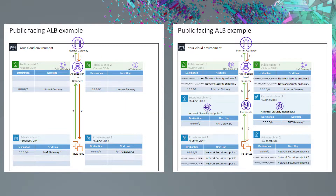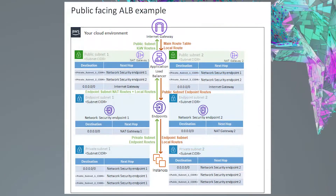To give you a better idea of what we're trying to accomplish, shown here are example diagrams before and after the route table changes are made. As you can see, we are inserting both of the network security endpoints right between the private subnets and the public subnets for two different availability zones. With the application load balancer deployment model, we want to protect all traffic for the application load balancer's target group in the private subnets. The routes we create will inspect all traffic between the private subnets and the internet, and all traffic between the private subnets and all public subnets.